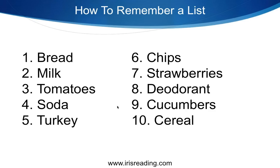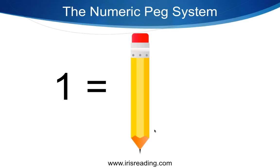I'm going to show you the list — bread is number one, milk is number two, and so on. You're going to use the Numeric Peg System, a visual memory technique. Here's how it works: each number is pegged to a visual object. We call it the Numeric Peg System because each number gets pegged to a visual you can see in your mind.